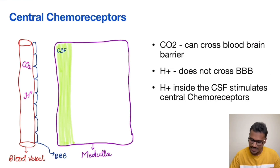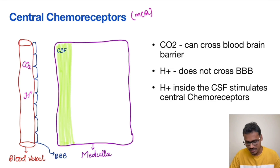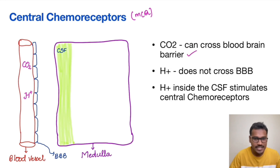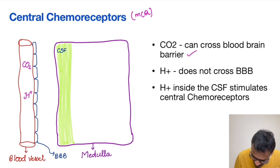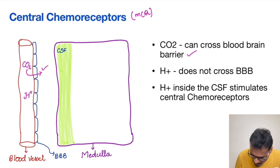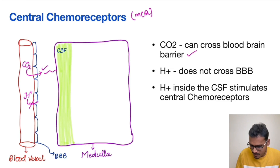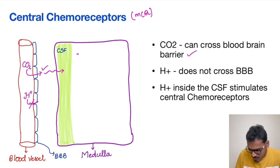The central chemoreceptors have very fascinating features, and lots of MCQs have been asked about them — so please pay attention. CO2 is the one which can cross the blood-brain barrier, but does it stimulate the central chemoreceptors directly? The answer is no. The central chemoreceptors are permeable to CO2 but not to H+ ions.